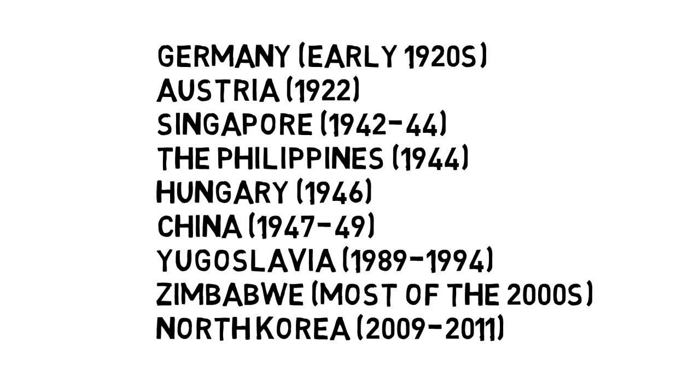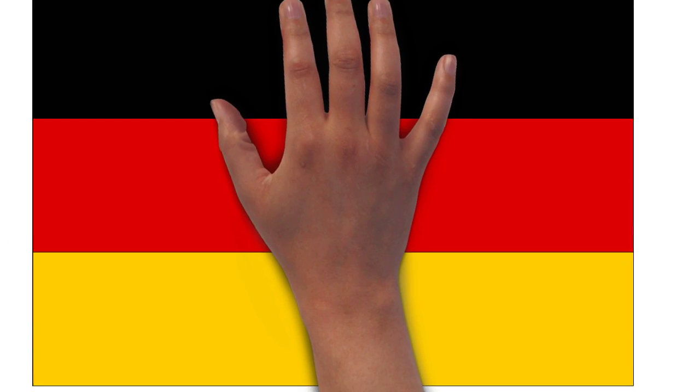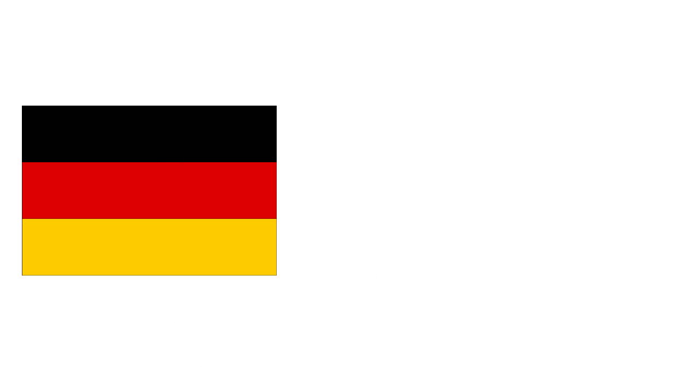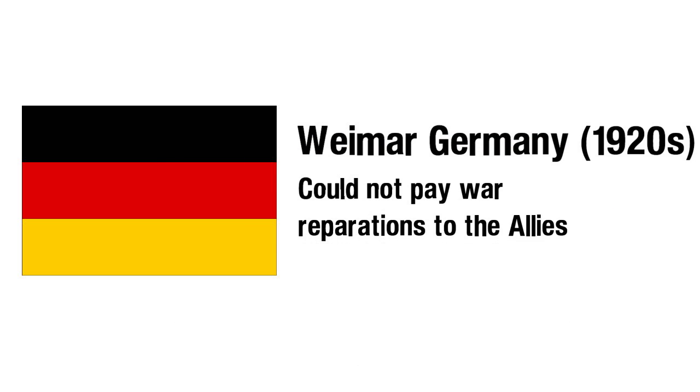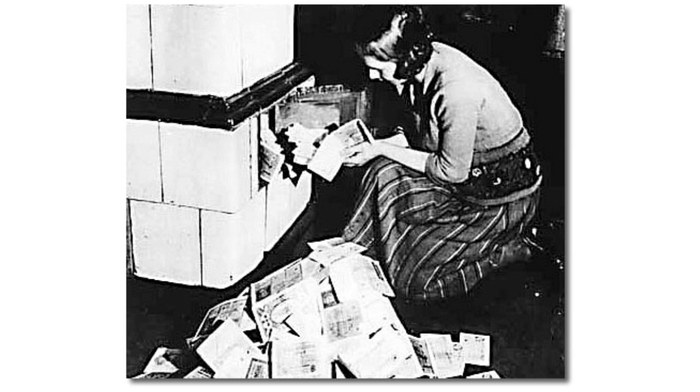One of the earliest and most severe cases was experienced in the German Weimar Republic in the early 1920s as they struggled to pay back war reparations to the Allies. The situation was so dire that to keep warm it was more cost effective to burn paper money than to use it to buy fuel.